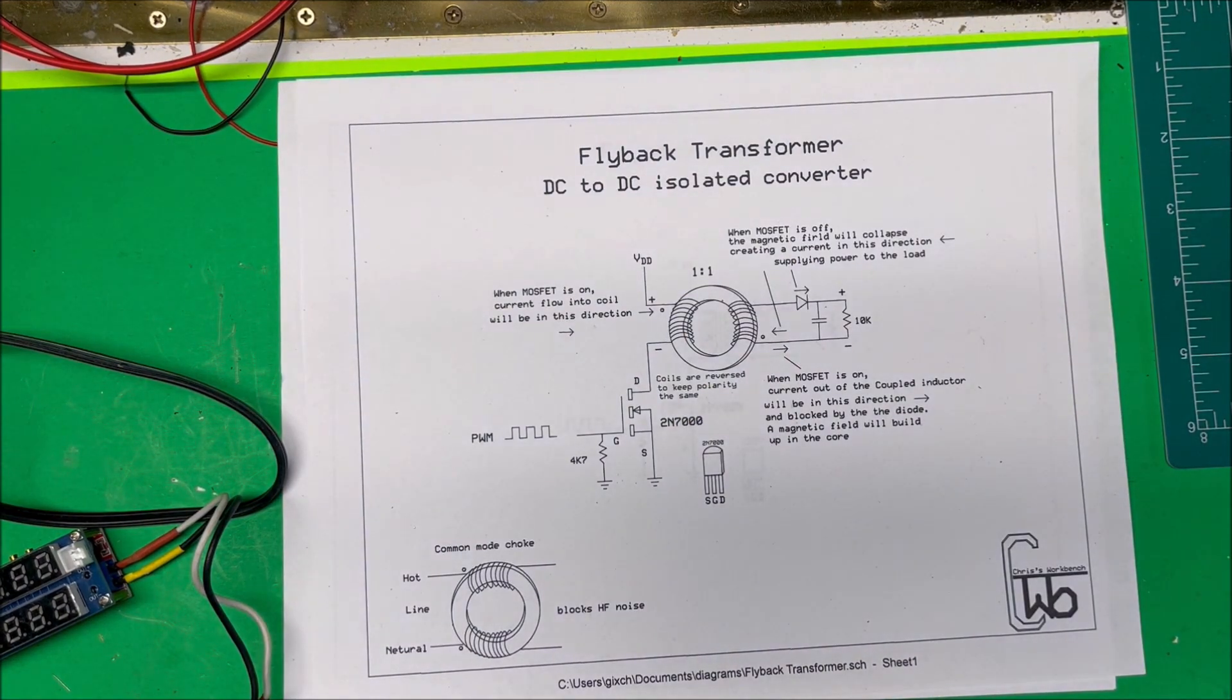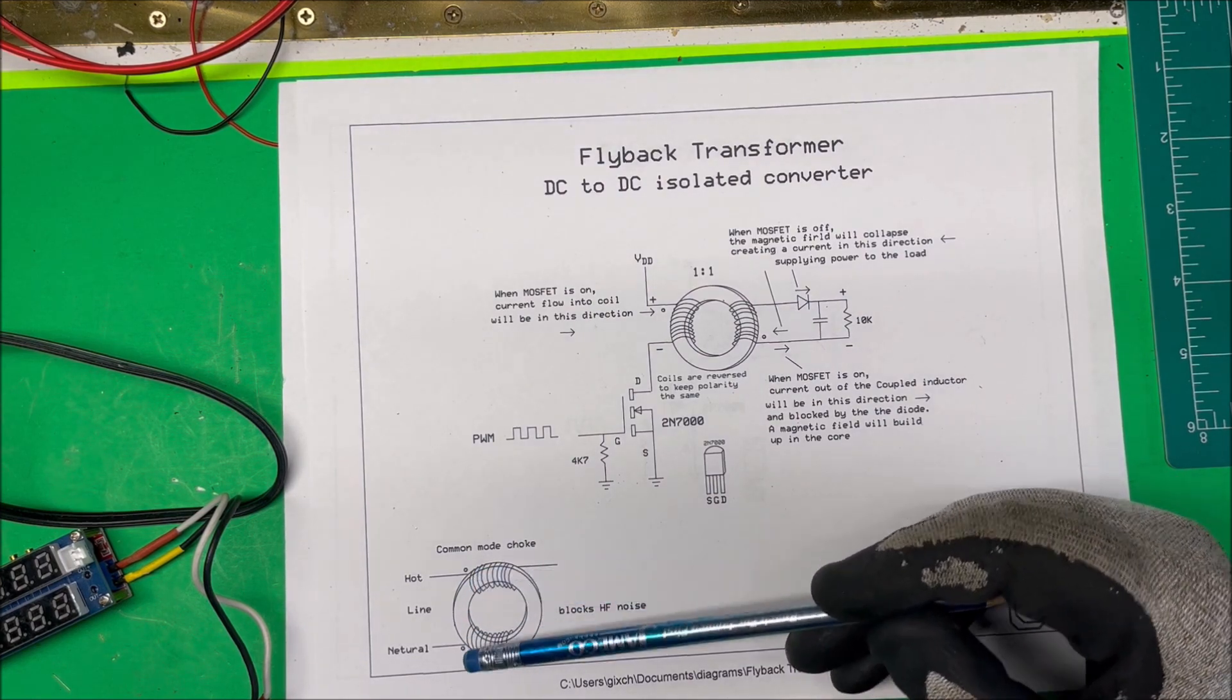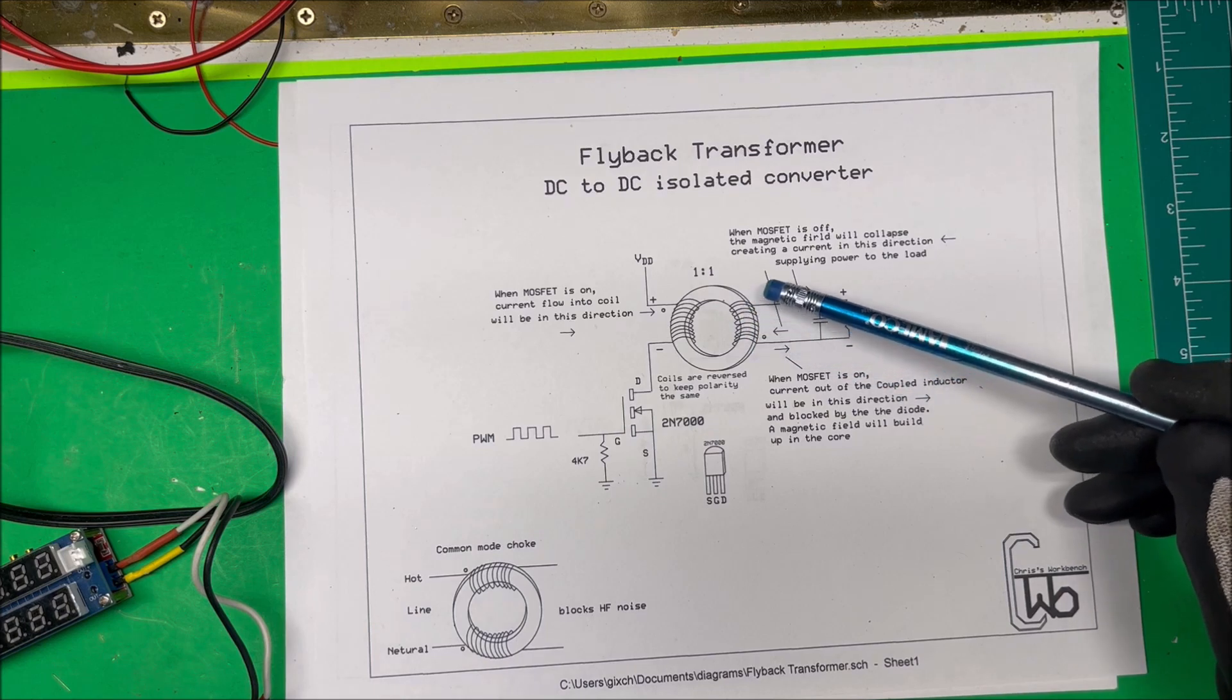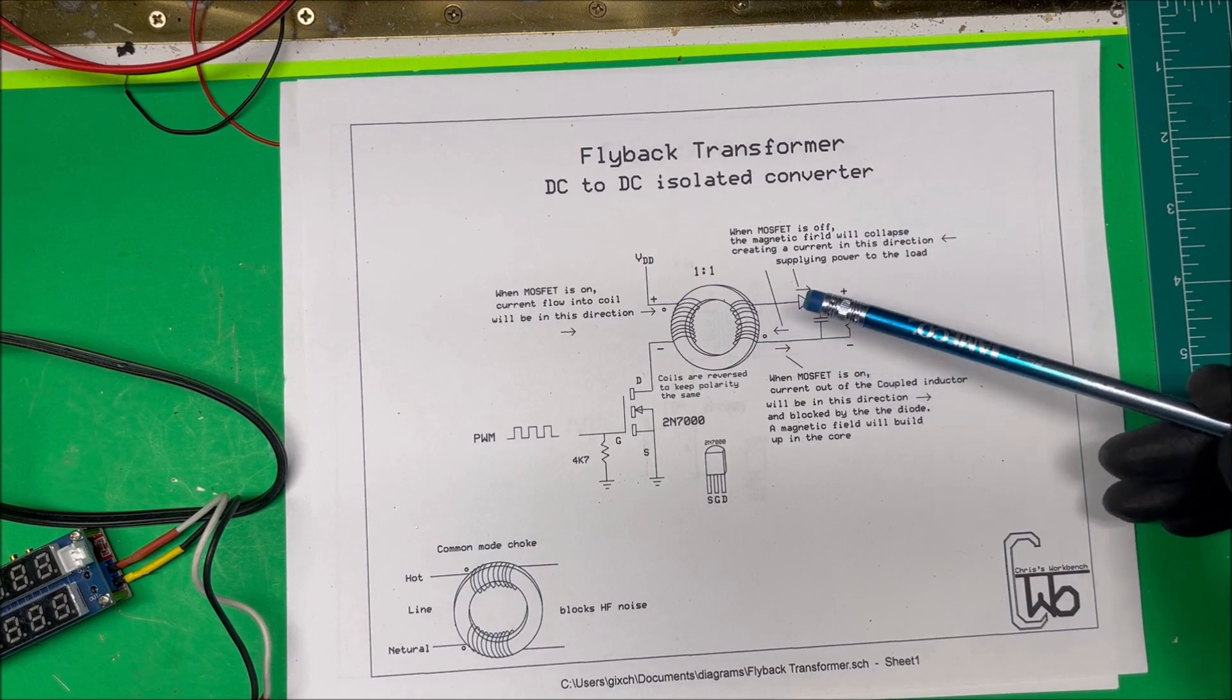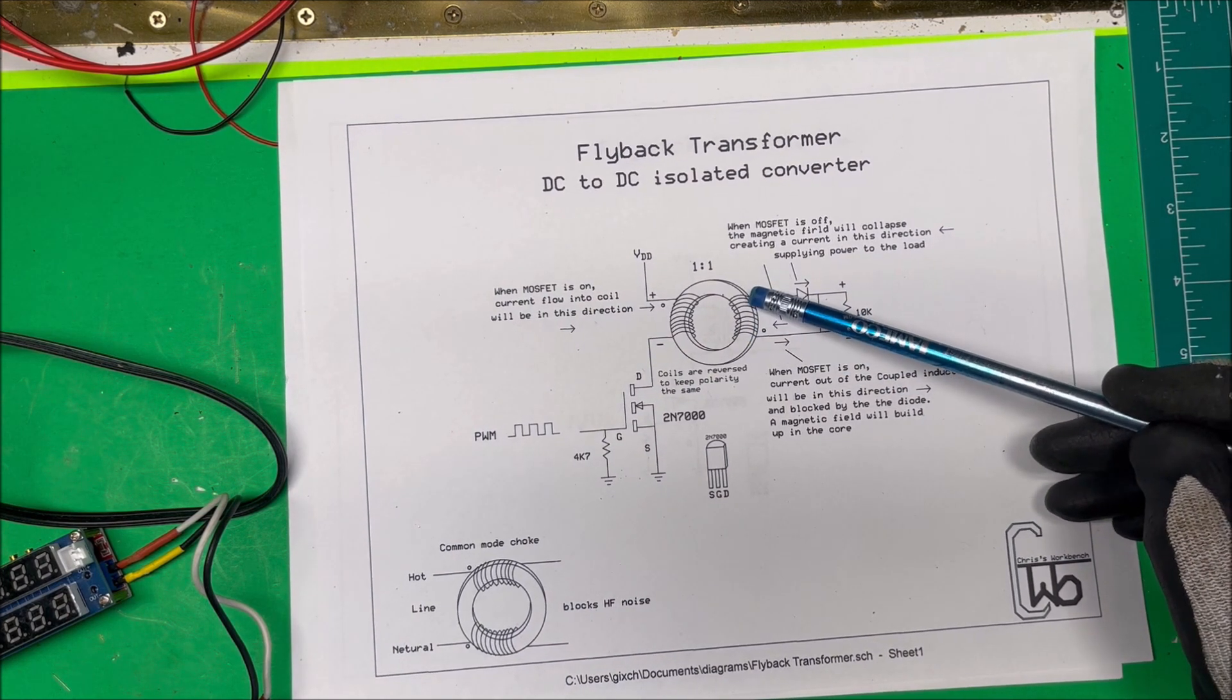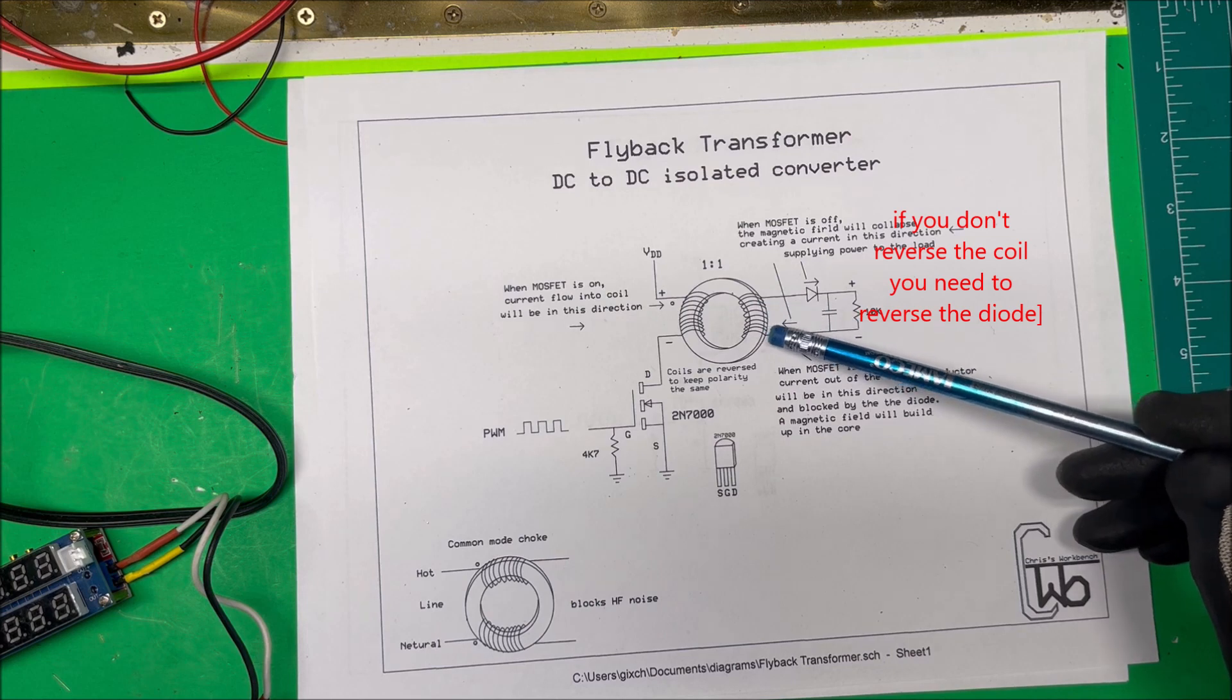These dots on the coil, on the transformer, tell you which way it's wound around the core here. What I did is I took the winding off this side and wound it in the opposite direction, so we have a dot up here and a dot down here. Now what that does, when we have positive here, it allows this side to be positive and this side to be negative. If you don't rewind it and the dots are up here, then this becomes negative and this is positive down here, but it works just the same. I'm doing it this way because this is normally how flyback transformers work.